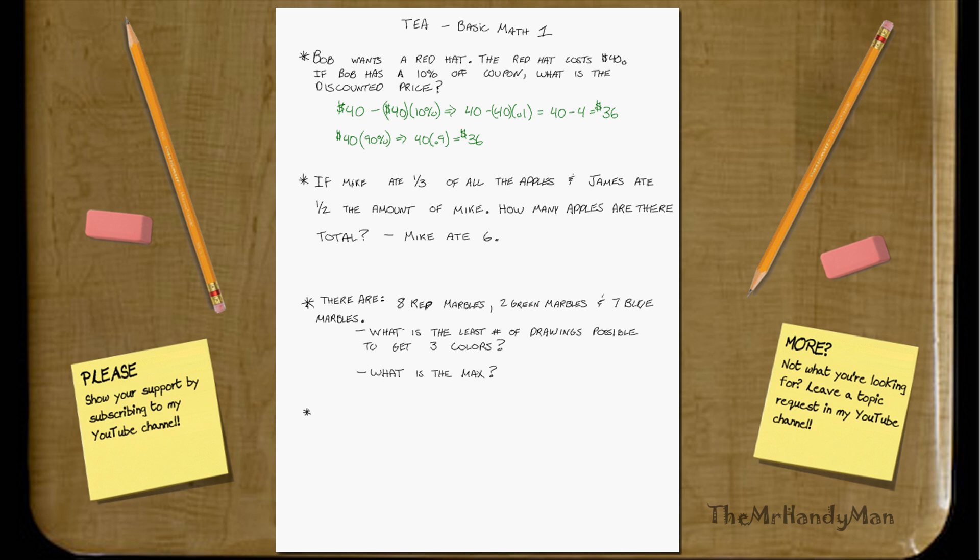Well, it says in the beginning, as you can see right over here, that Mike ate one-third of all the apples. So therefore, there must be three times as many as Mike ate. So six times three equals 18.